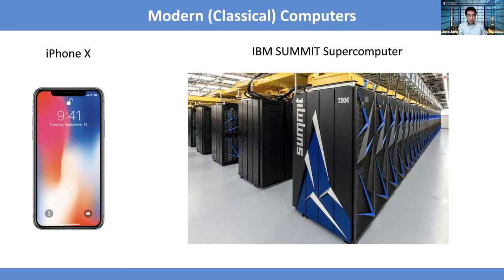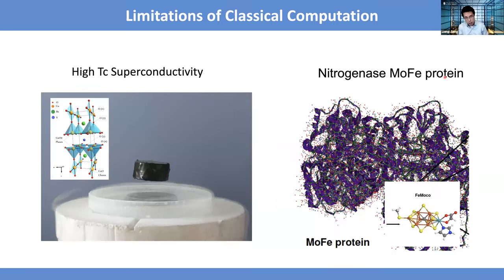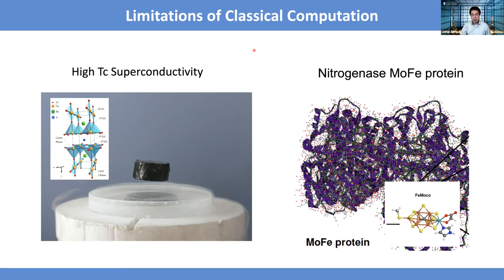For high-TC superconductivity, it is still controversial what the underlying mechanism is that enables a device to be superconducting at a much higher temperature. It's also intriguing whether we could understand such a mechanism and develop new materials that would be superconducting even at room temperature. Recently, people have shown that applying a huge amount of pressure can make a device superconducting at room temperature, but that's still a bit far from real applications because the pressure required is ridiculously high. So it's still a wide-open field.